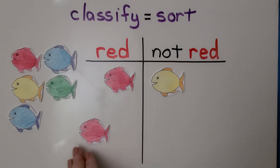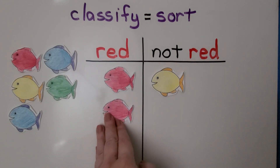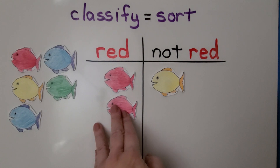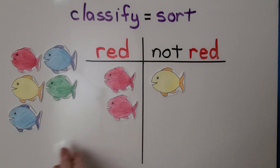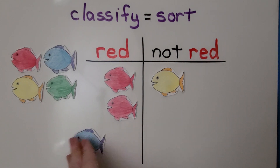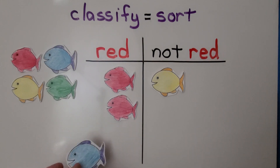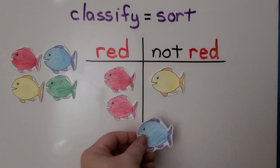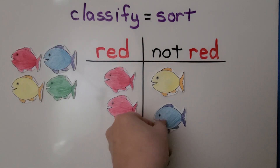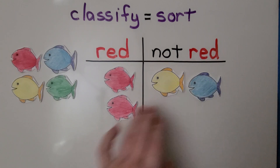What about this fish — is this red? Yes, it's the same color as this one. These are both red. What about this fish — is this red? This fish is blue. It's not red. It goes on the not-red side.